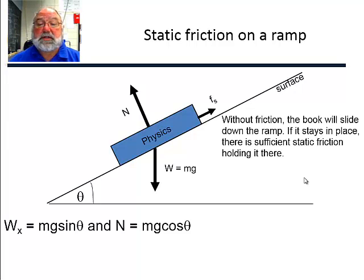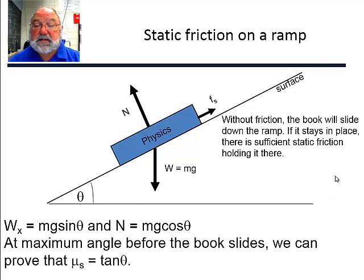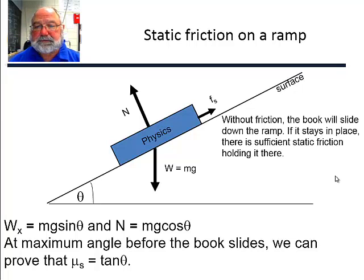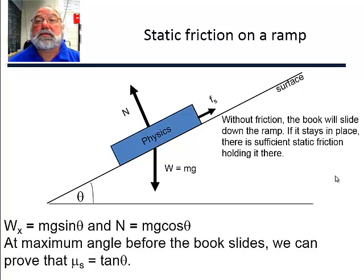At the maximum angle before the book slides, we can prove that the coefficient of static friction is equal to the tangent of the angle. That's pretty useful: if you can raise the incline until the object just starts to slide, the tangent of that angle is equal to the coefficient of static friction.